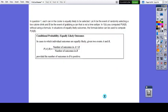So what does this bring us to? In question one, each can in the cooler is equally likely to be selected. So A is the event of randomly selecting a low calorie drink and B is the event of grabbing a can that is not a lime seltzer. So essentially not a lime seltzer is B and low calorie drink is A. In 1B, you computed the probability of A given B. That's how you read that without using a formula. In situations of equally likely outcomes, the formula below can be used to compute probability of A given B.